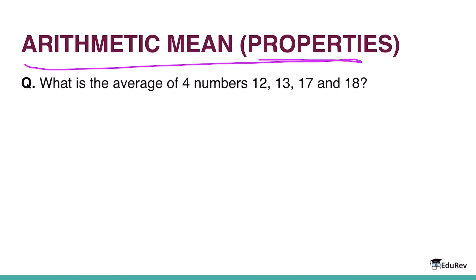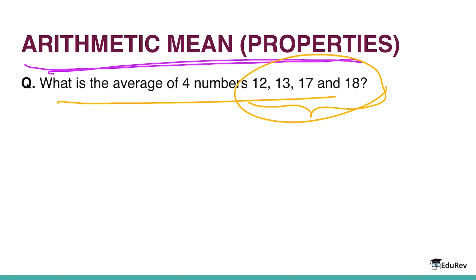Now we come to the concept of arithmetic mean — and here's a very simple yet thought-provoking question. Find the average of four numbers: 12, 13, 17, and 18. Adding them gives 60, divided by 4, giving an average of 15.